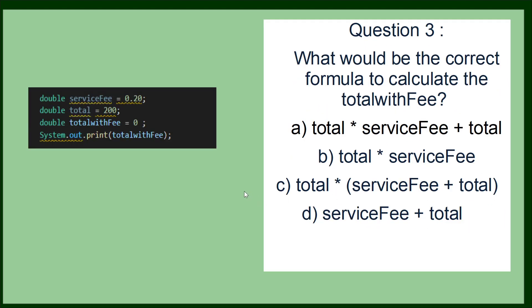In question three, the aim here is just to test your ability to understand the order of the mathematical operators. The correct answer is A because multiply becomes before the additional operator. So you don't need the brackets there. The total will be times by the service fee and then the total will be added on after that.